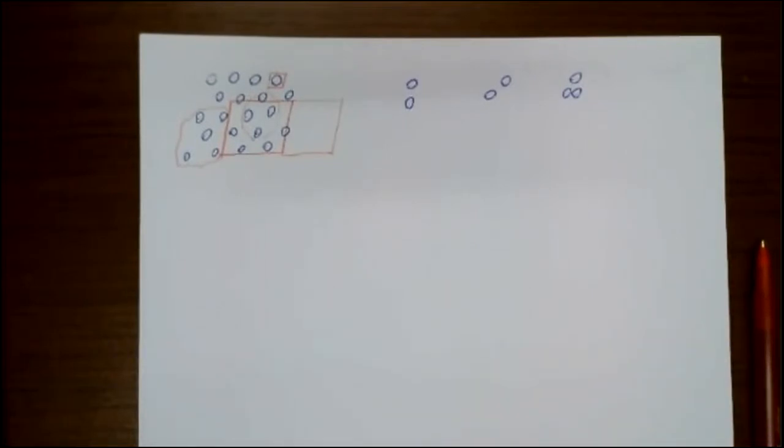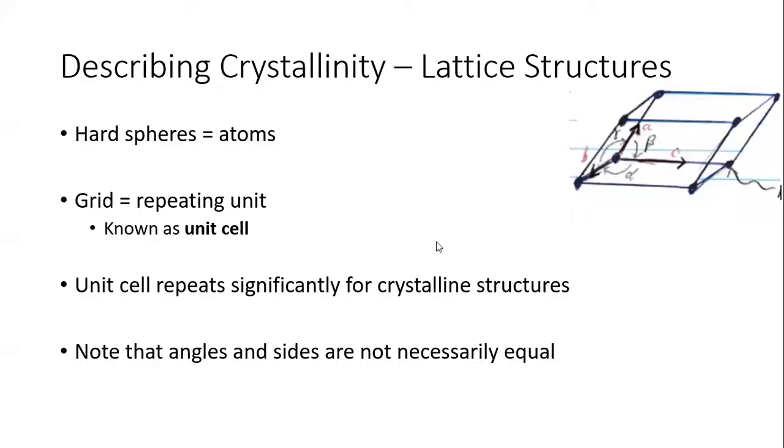That's what we're going to call a unit cell, what I just described to you, the minimal structure that we can just copy and paste and get what we need. Those are called unit cells. For crystalline structures, we're going to have this unit cell business repeat much more easily.